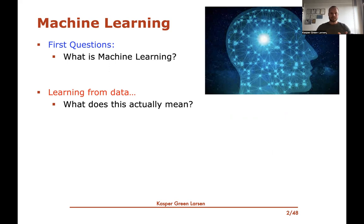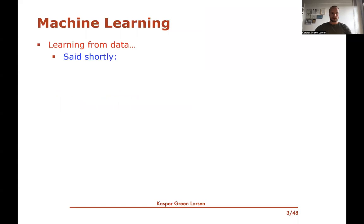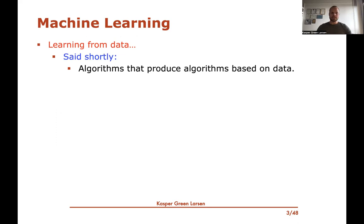So that sounds easy enough, but what does this actually mean in practice? What does it mean to learn from data? One way to think about it is to say that if you know what an algorithm is, then machine learning is really just algorithms that produce new algorithms based on data. So instead of an engineer or a programmer sitting down and implementing an algorithm, you have the computer itself produce the algorithm based on some data.